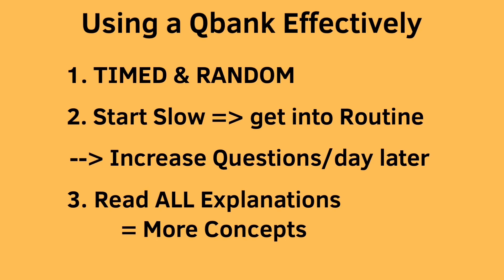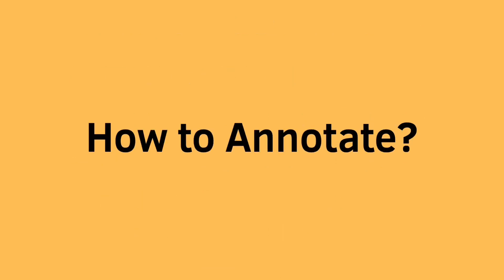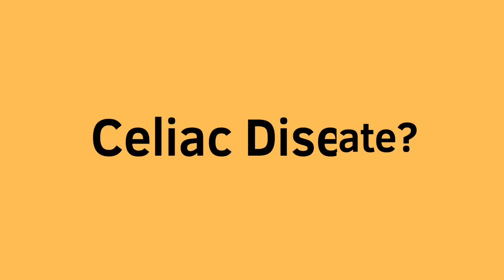This will also help you write down differential points when you annotate your First Aid. So how do you annotate? There are several ways I used and I am sure you will develop your own as you keep going. Let's say we were doing a question about celiac disease. The first thing we do is go to the index of First Aid and find where celiac disease is or use the search functionality if you are using a PDF.